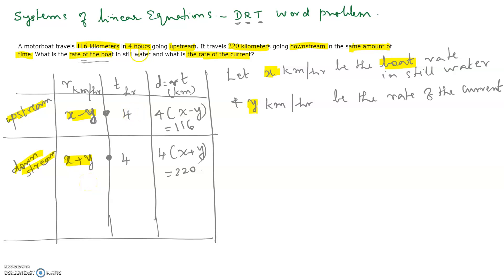The time taken in the problem is the same for both upstream and downstream, which is four hours, so that goes in the time column for both rows. The distance column is rate multiplied by time, so for upstream it is four times x minus y, and the upstream distance is given as 116 kilometers. For downstream it is x plus y times 4, which equals the rate multiplied by time.